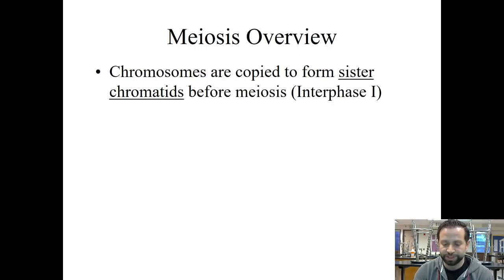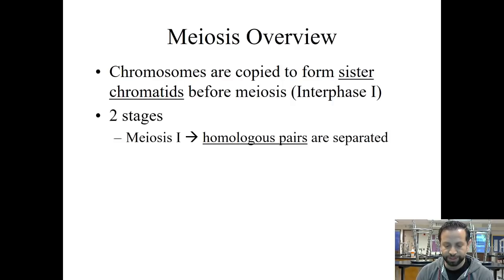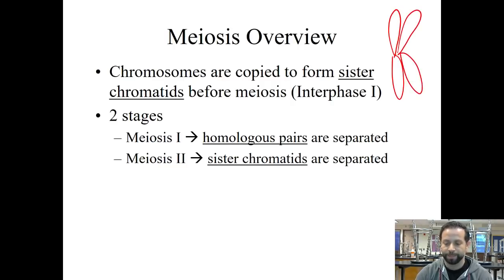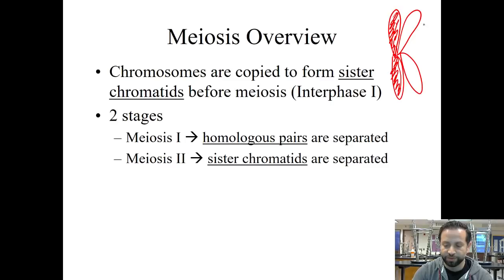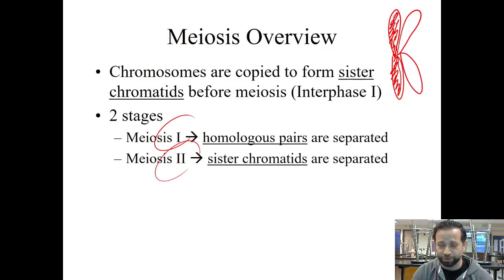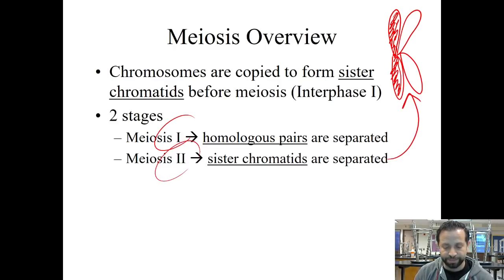Chromosomes are copied to form sister chromatids before meiosis. There are two stages. Here's what I want to draw for you — that chromosome I drew in the beginning, when it replicates, it's going to look like that. The red ones and white ones — we call those sister chromatids. When a chromosome has replicated and looks like this, we say that each part of it is a sister chromatid. There are two stages: meiosis I and meiosis II. In meiosis I, homologous pairs or homologous chromosomes are separated. In meiosis II, sister chromatids are separated. We'll have some visuals in a bit, and I'll show you what I mean by all that.